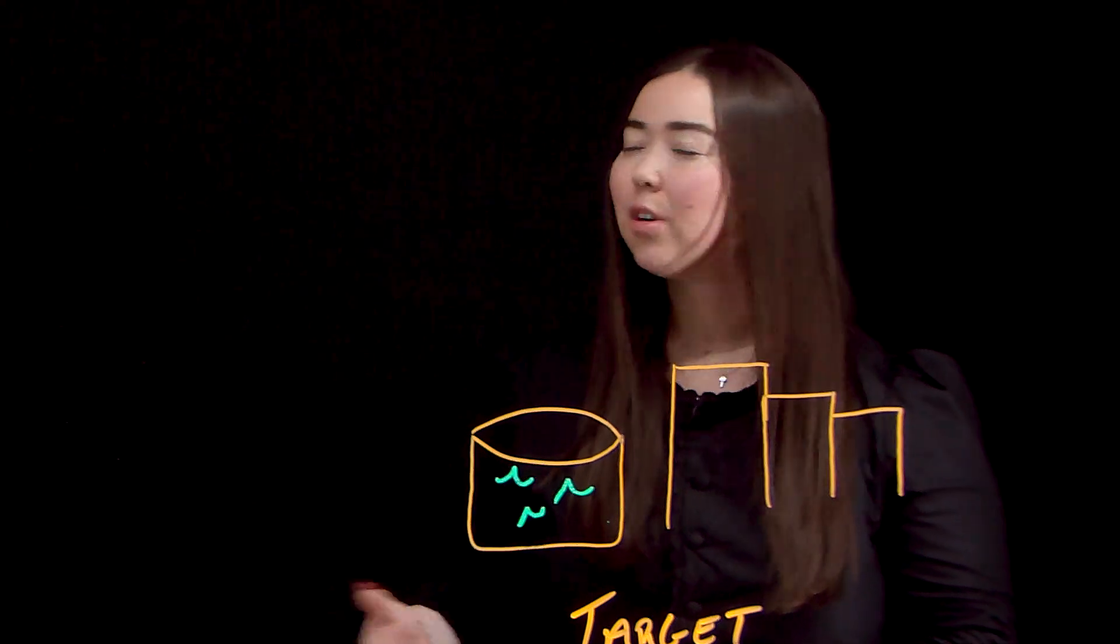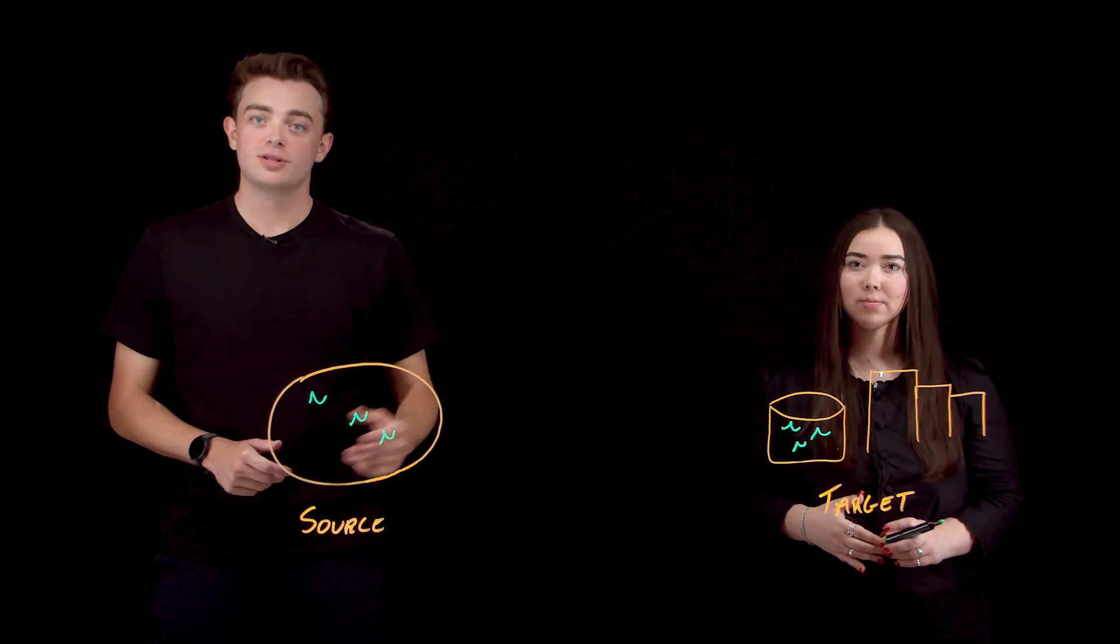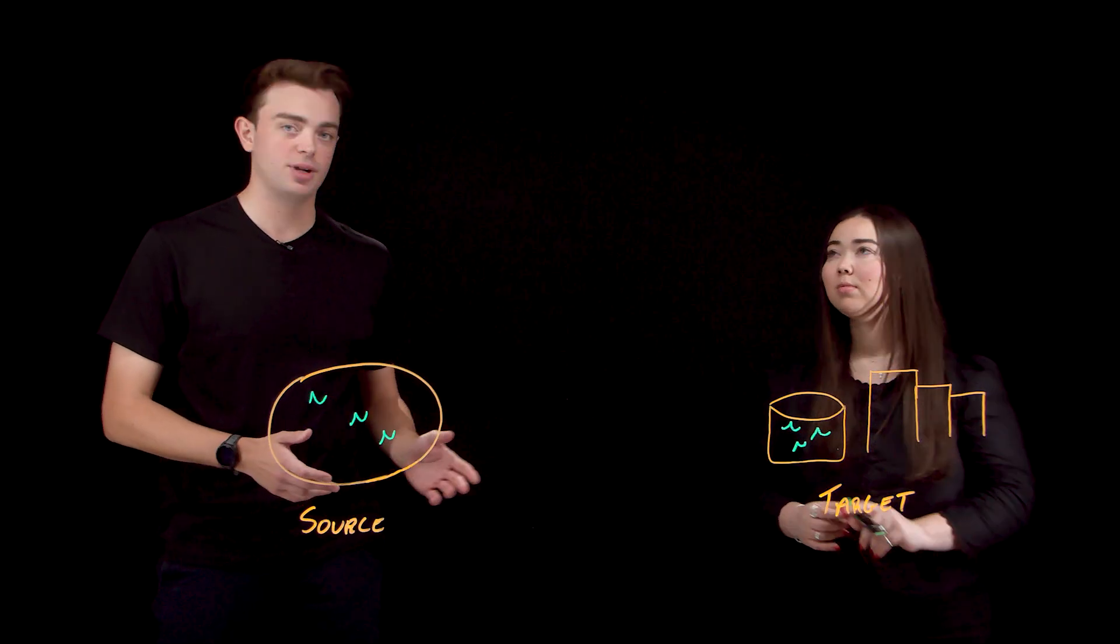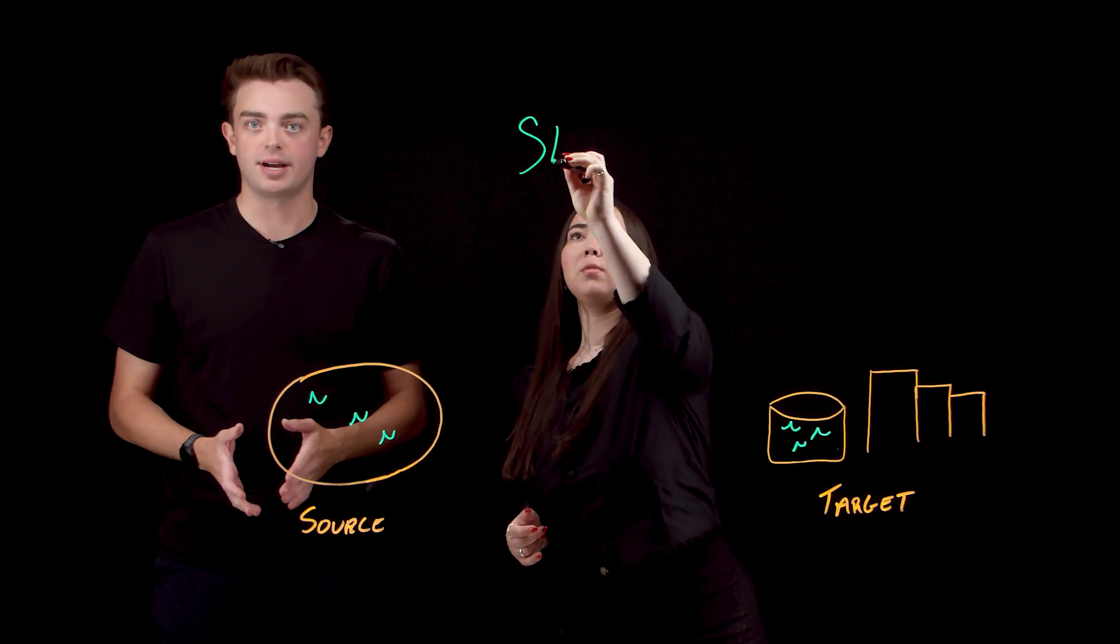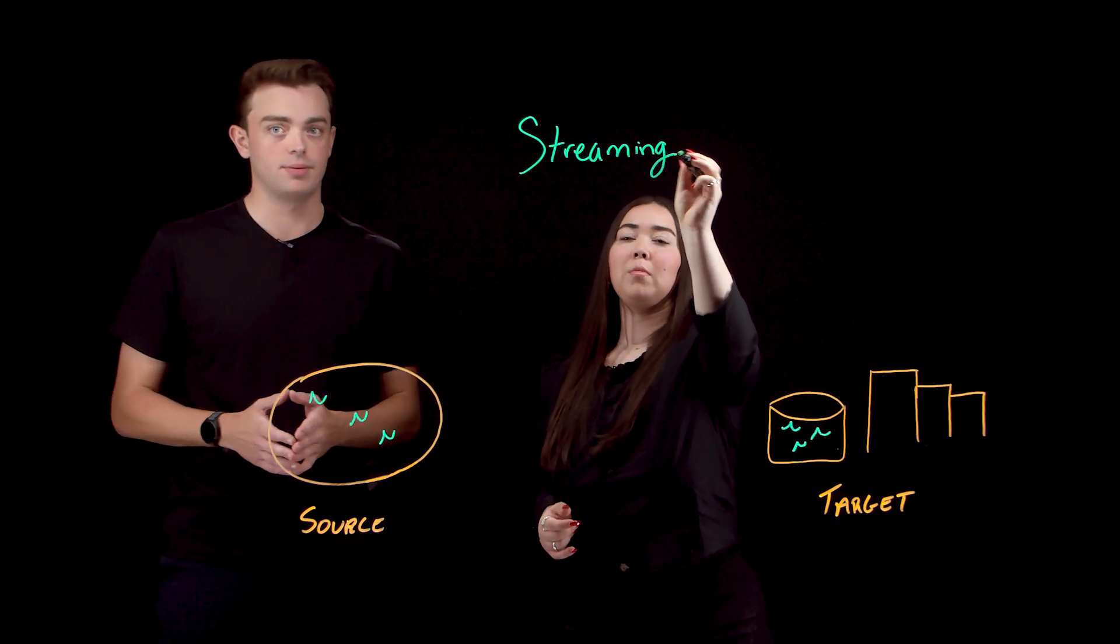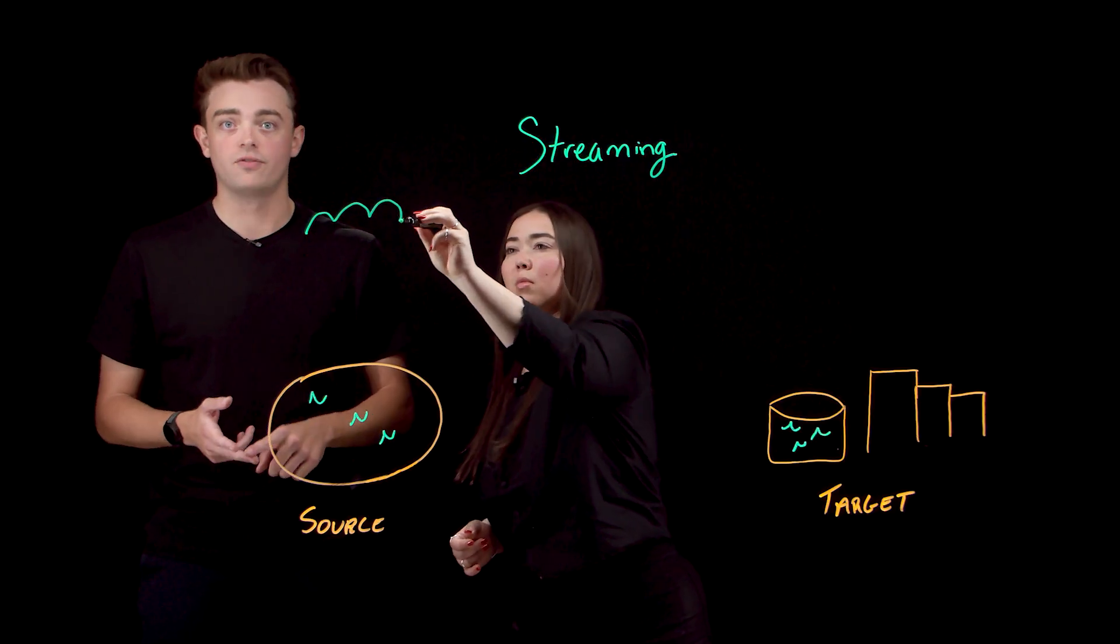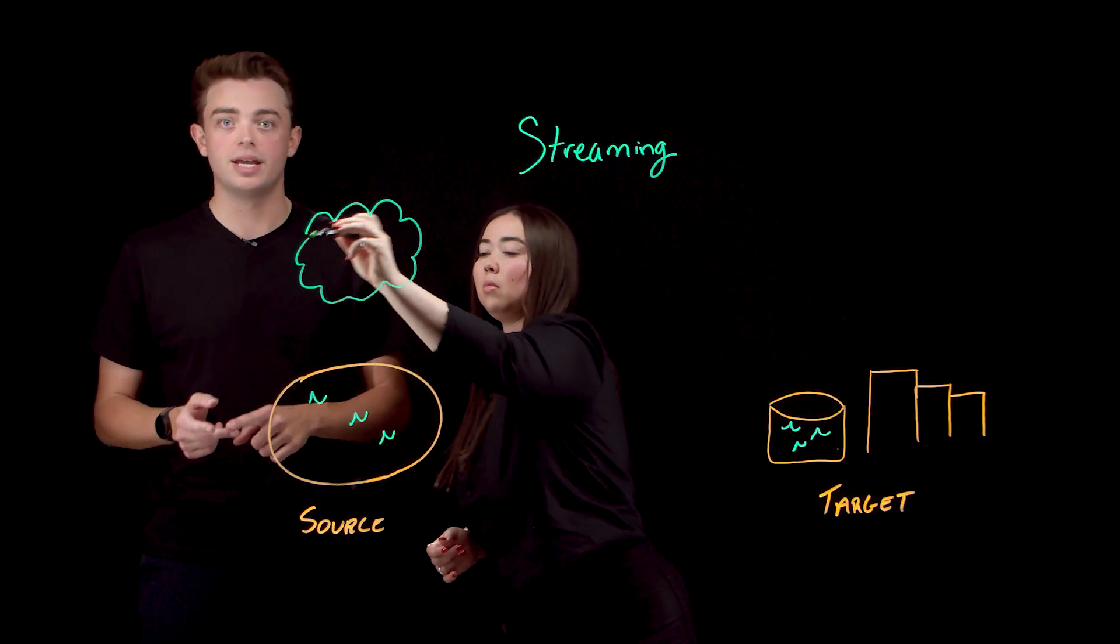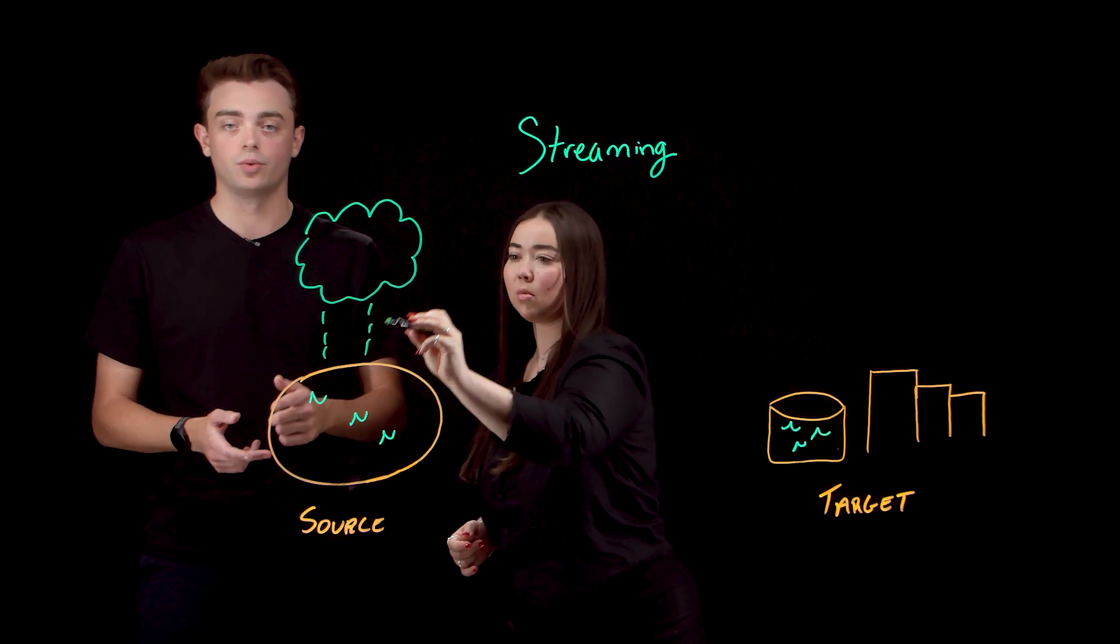Now that we've covered batch, what are some other data integration styles? So that's a great question. Real-time streaming is another popular data integration style. With streaming, you're processing data continuously as it flows in, from sensors, applications, or event systems like Kafka, enabling downstream systems to react in real time.